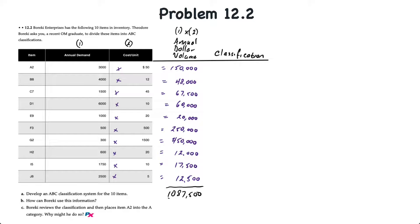Looking at the data, if we start with the highest dollar volume items first, we can see that G2 at $450,000 is the highest, and the next highest is F3 at $250,000. The next highest item would be A2, but there's quite a gap there. So what we could do is leave A2 as a B-level classification and simply classify F3 and G2 as A-level inventory.